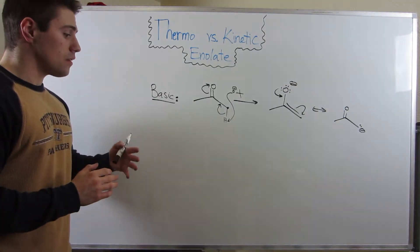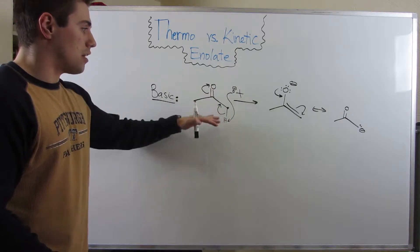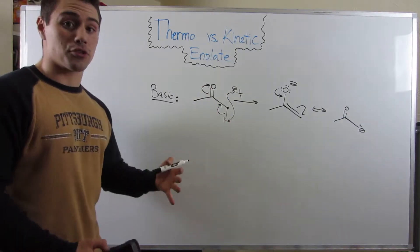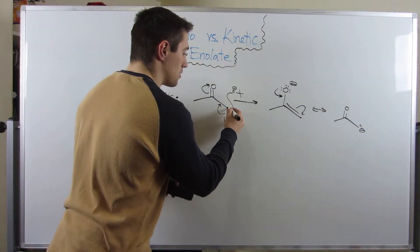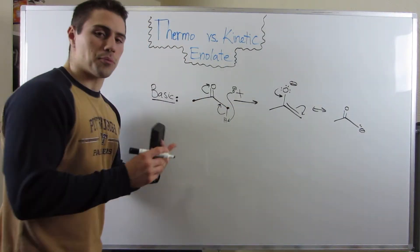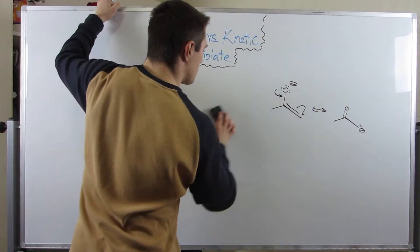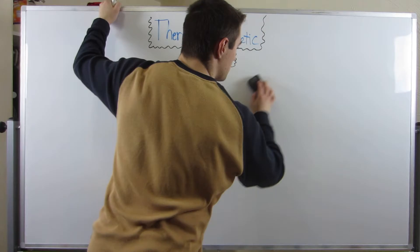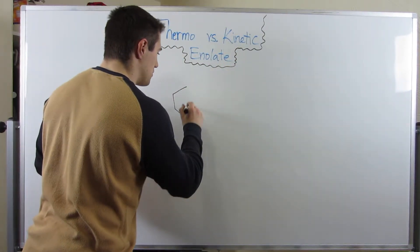However, there are two types of enolates we can form. When you have a carbonyl that's symmetrical, it doesn't matter which alpha carbon you deprotonate. It's a pretty simple situation. However, we need to address what to do in other situations.